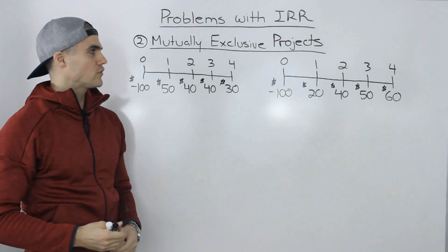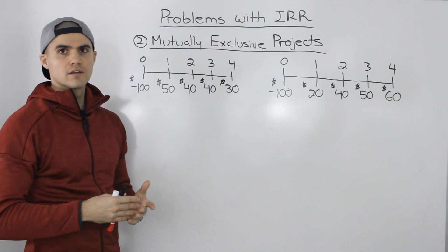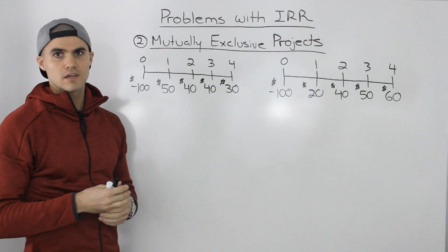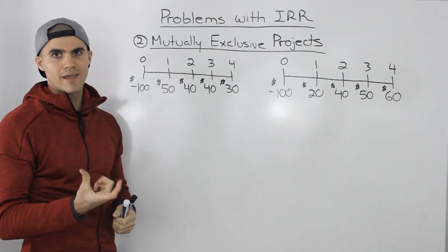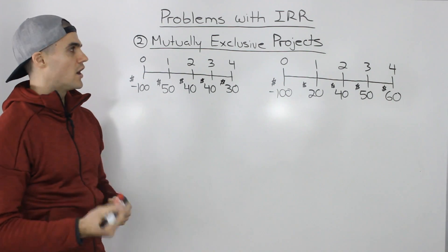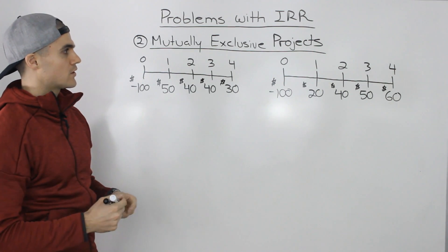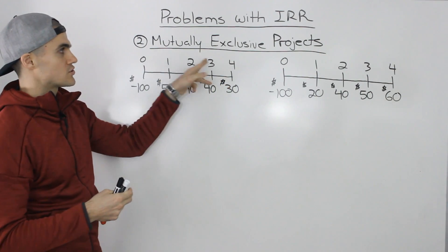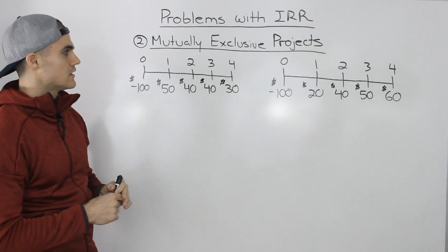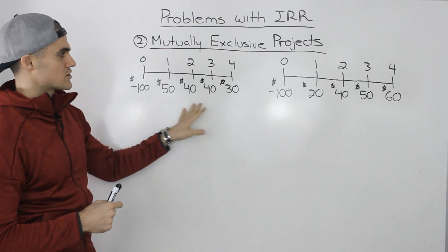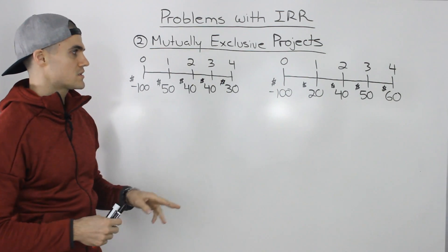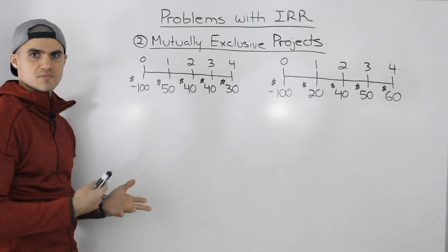Recall from the overview video that IRR leads to the same decision as NPV only when projects are independent with conventional cash flows. So what if the projects are not independent? If we're choosing between two mutually exclusive projects — meaning we can only choose one — another problem can arise.